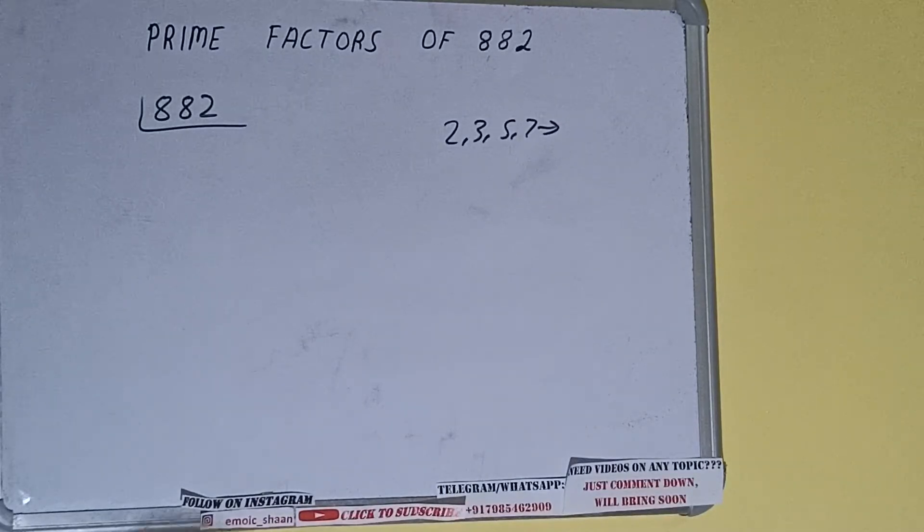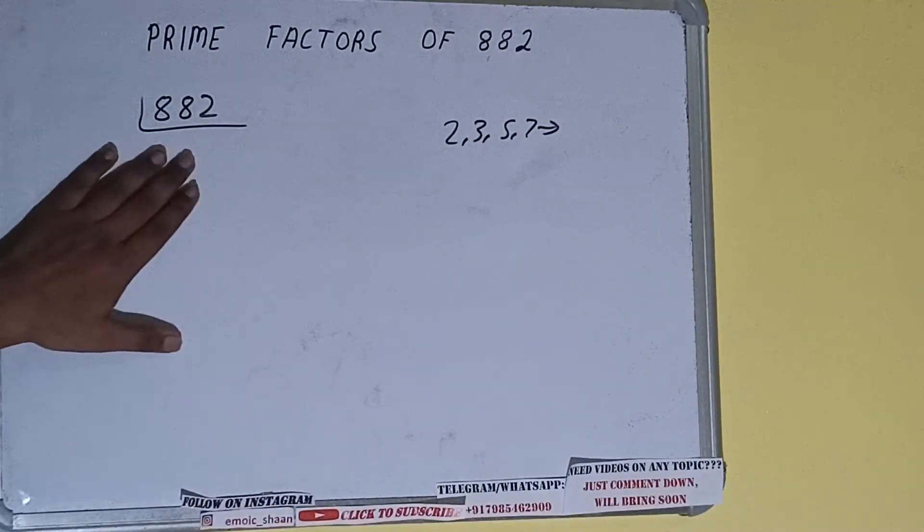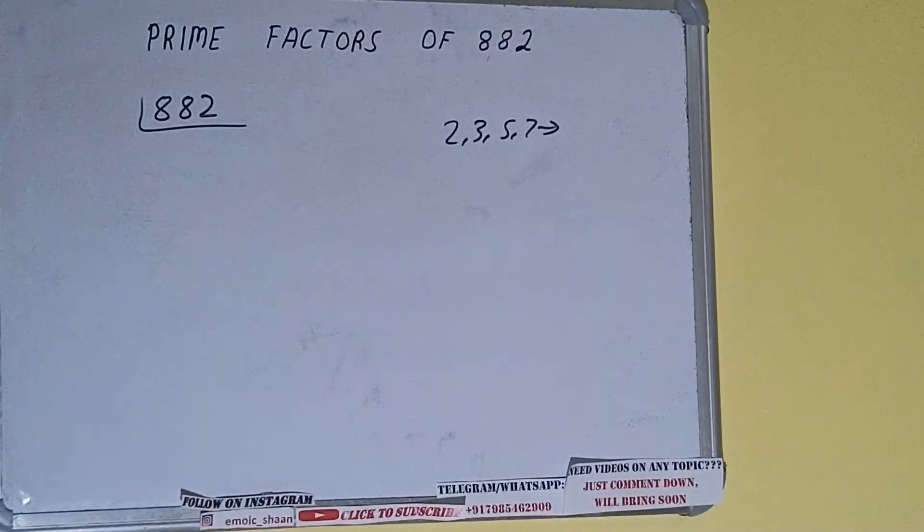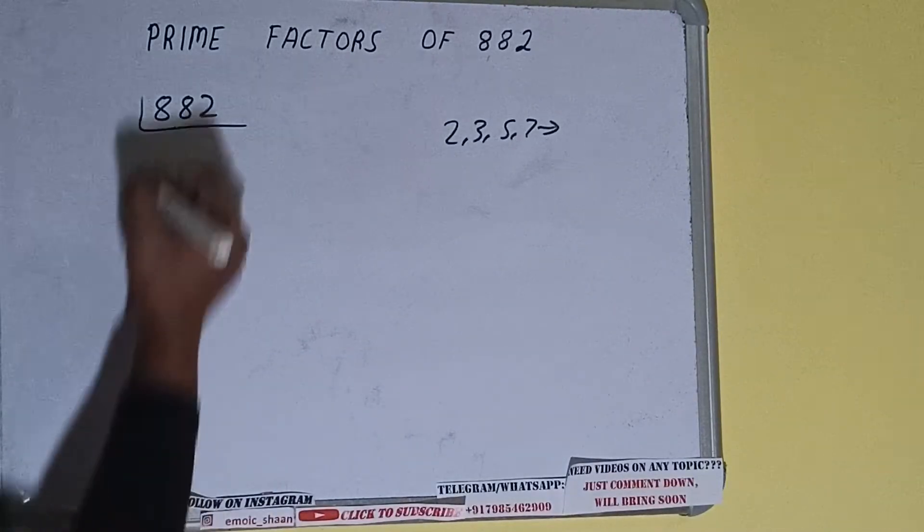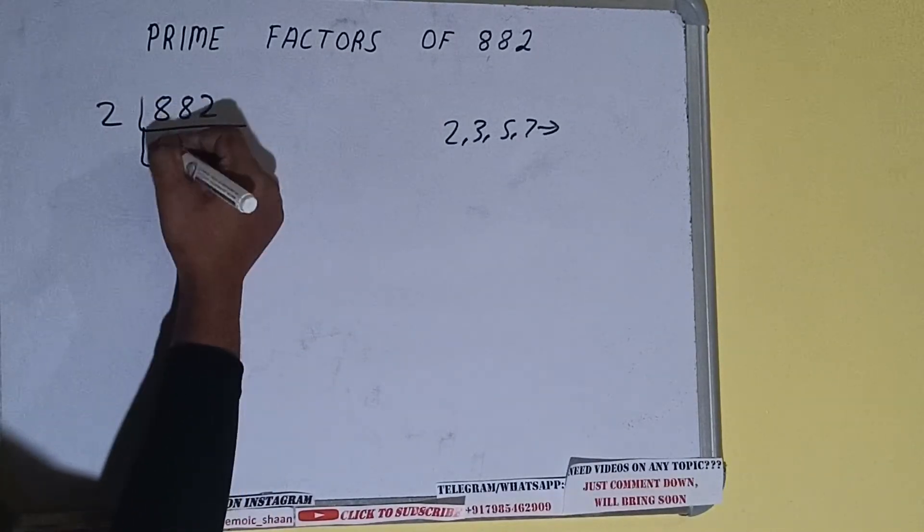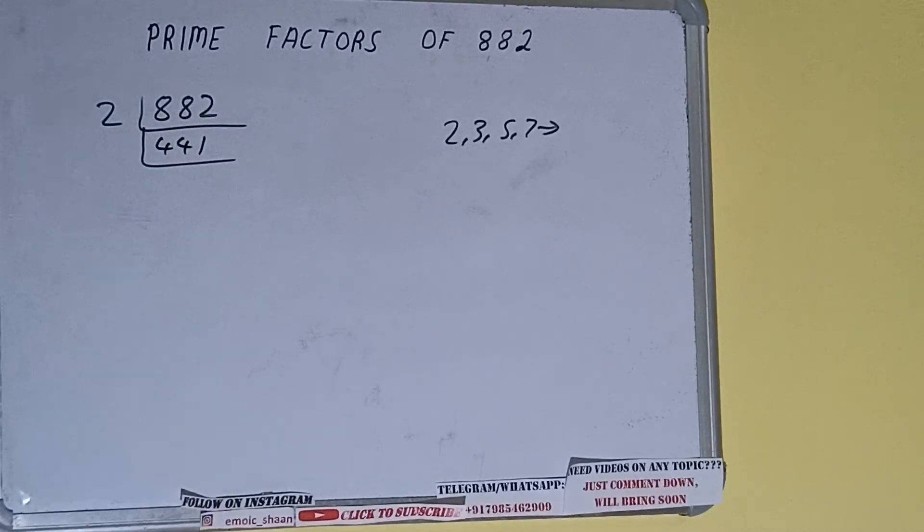We'll check with the lowest prime number we have, that is 2. Is the number 882 divisible by 2? Yes it is, because the number is even, and we'll be having 441. Now is this 441 divisible by 2? The answer is no, because the number is odd.